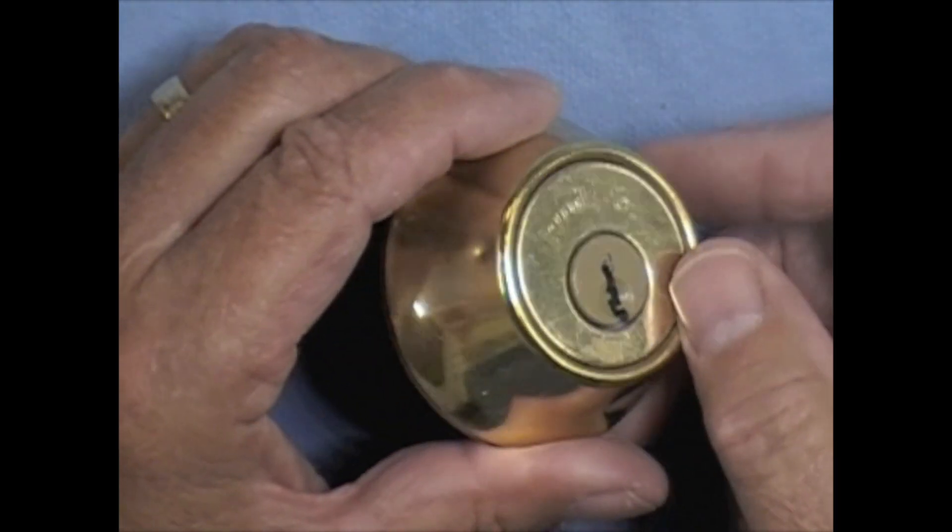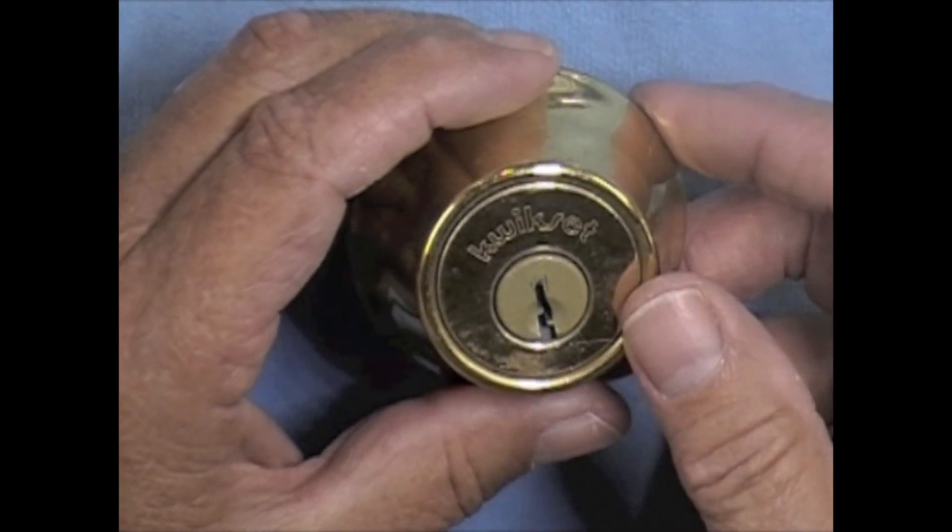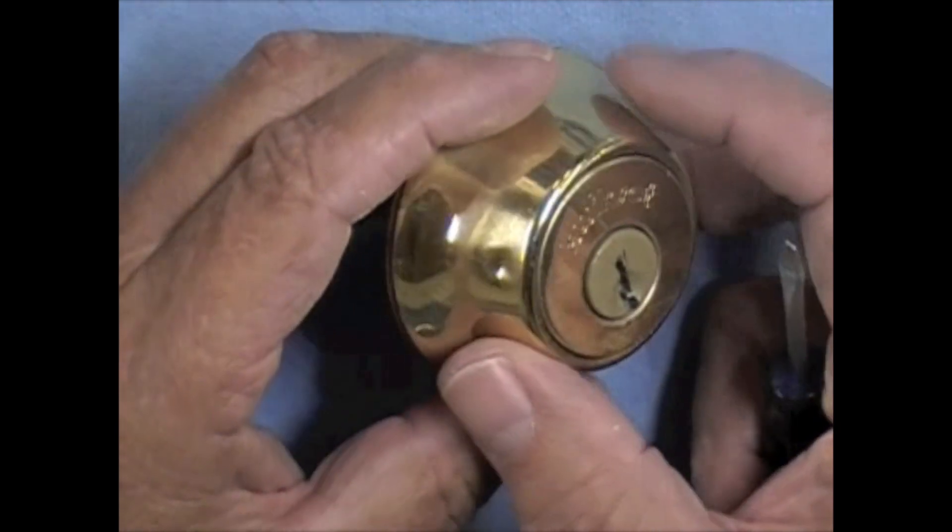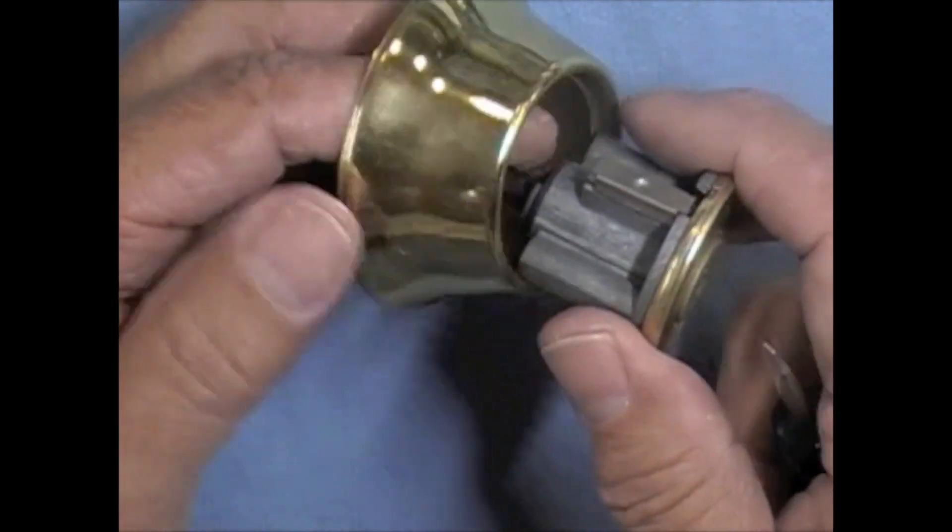We're going to shim this lock open. This is a Kwikset deadbolt lock and Kwikset is a good lock to start practicing shimming on.